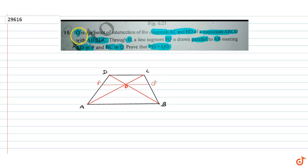The question given is: let O be the point of intersection of the diagonals AC and BD of trapezium ABCD with AB parallel to DC. Through O, a line segment PQ is drawn parallel to AB, meeting AD in P and BC in Q.